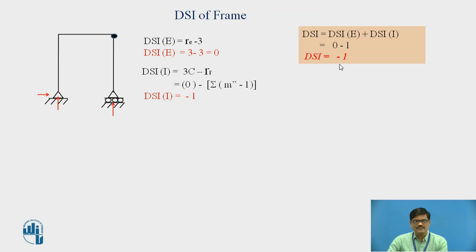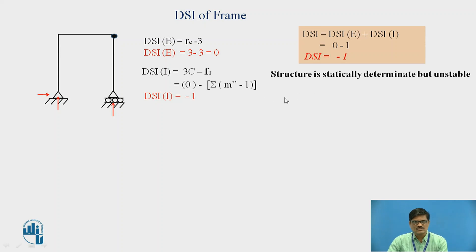A DSI of minus 1 indicates that this structure is determinate, no doubt. But the negative sign indicates that the structure is unstable. This particular structure is unstable — even a small load applied will cause failure. Since we have a hinge here, the roller is free to move. With an existing hinge, this particular support will move and may lead to collapse of the structure.